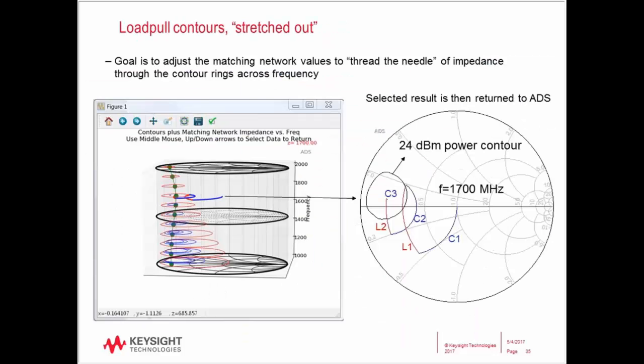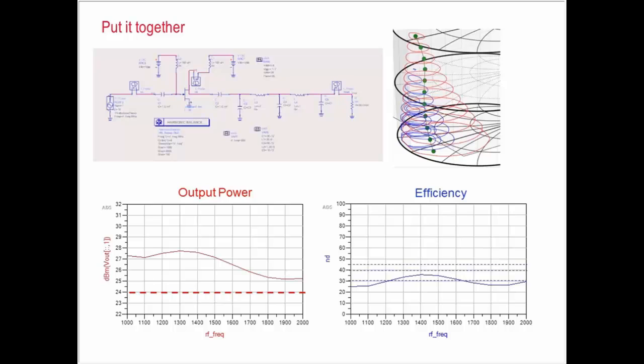These are just slides of the same thing, but let's put everything together. I did a simulation where I took that matching network, and I took the transistor, and I biased it up, and I put it all together. Not surprisingly, I got a broadband amplifier response.